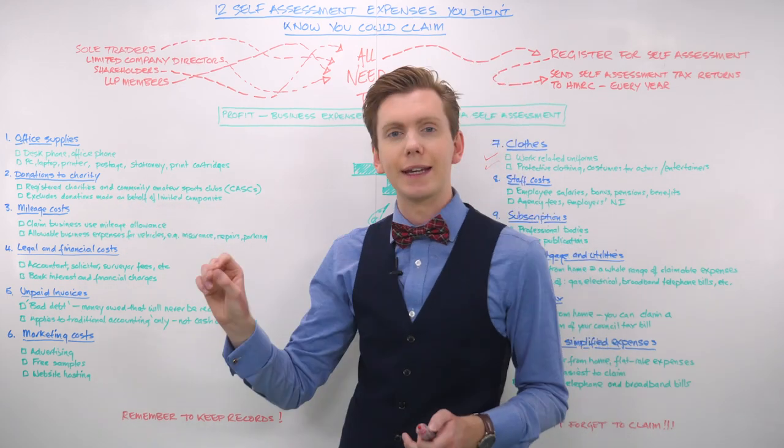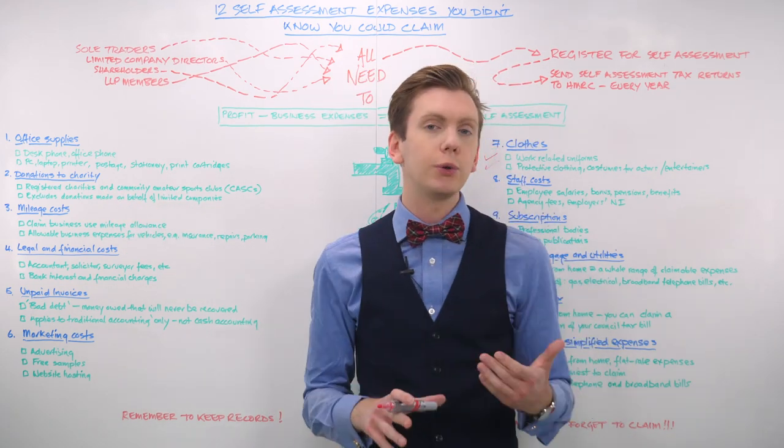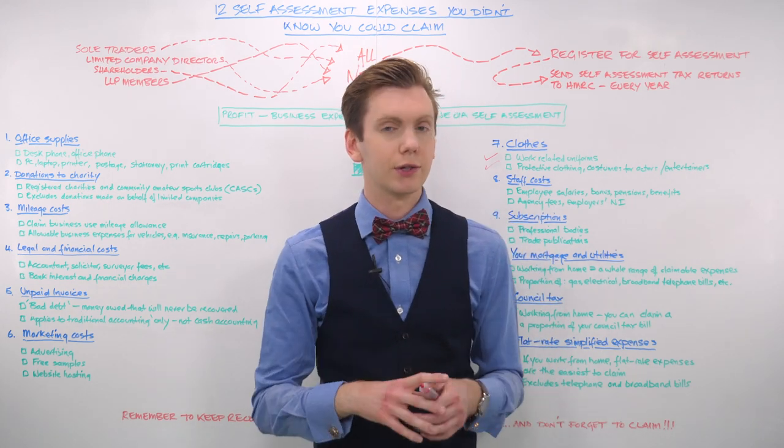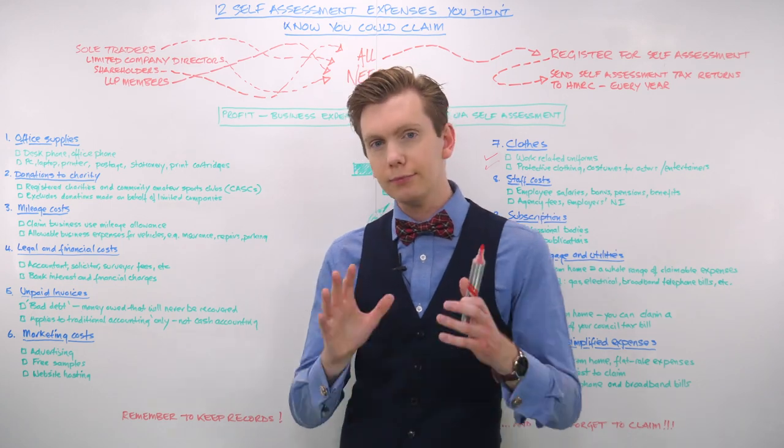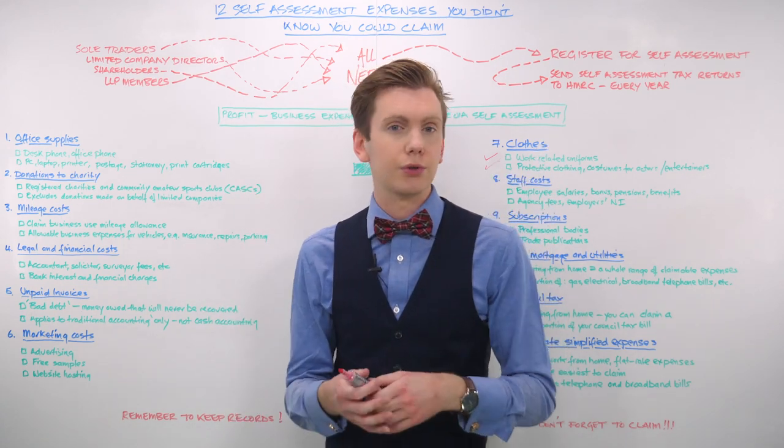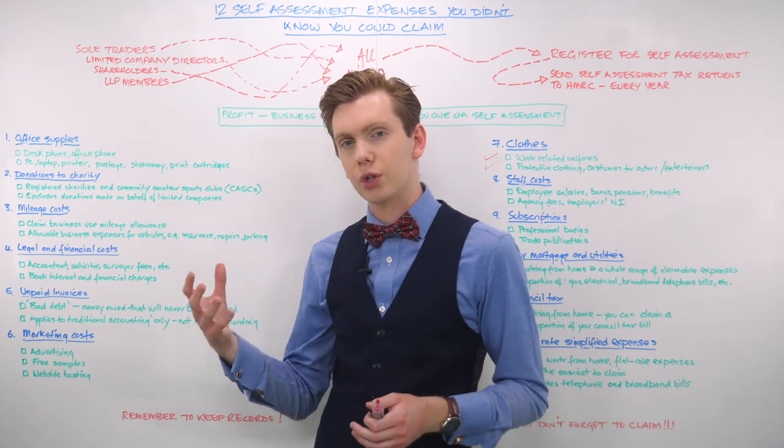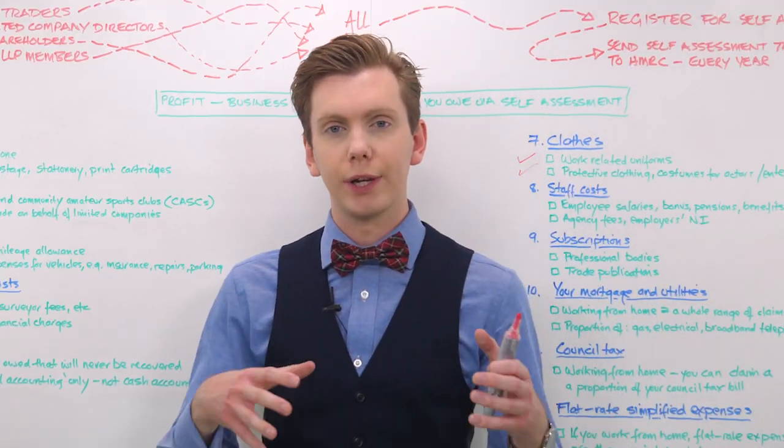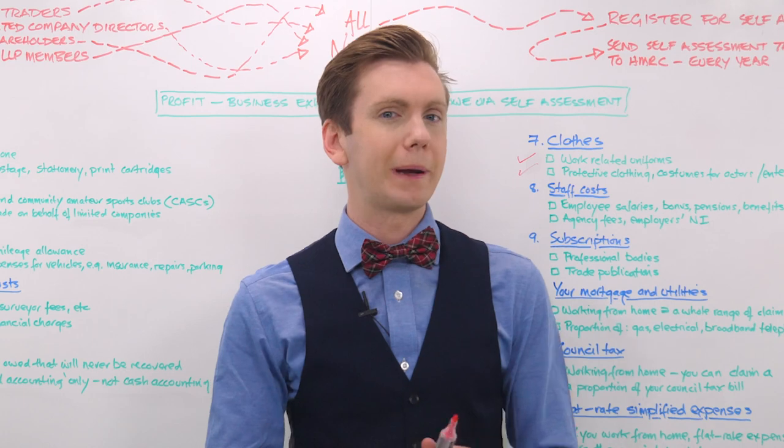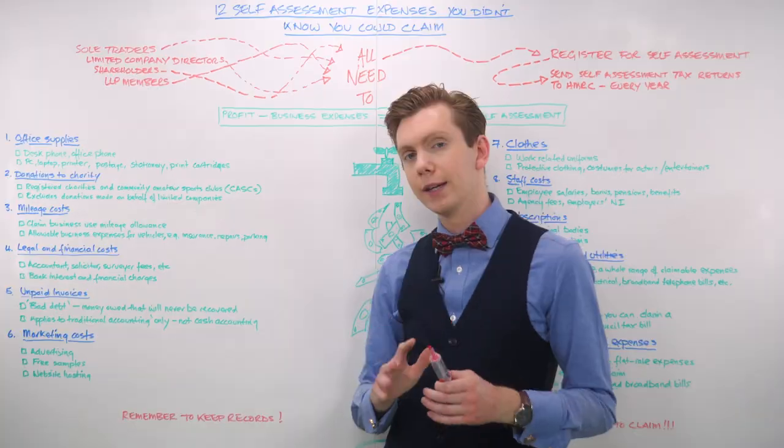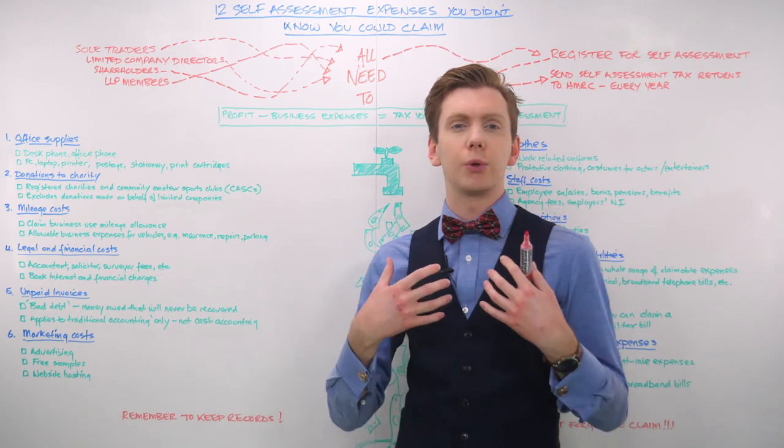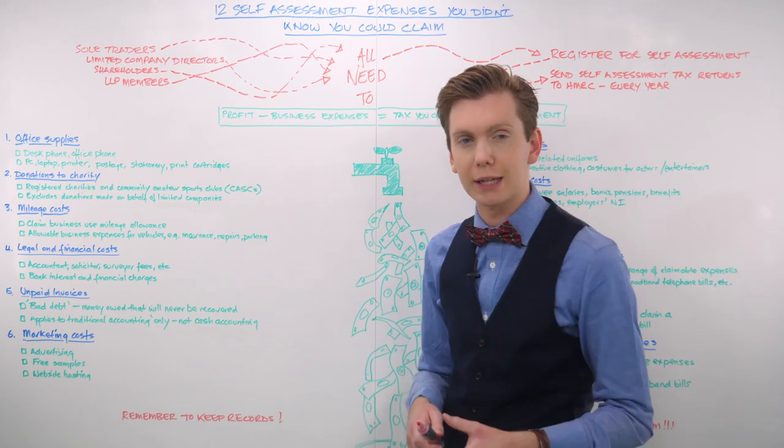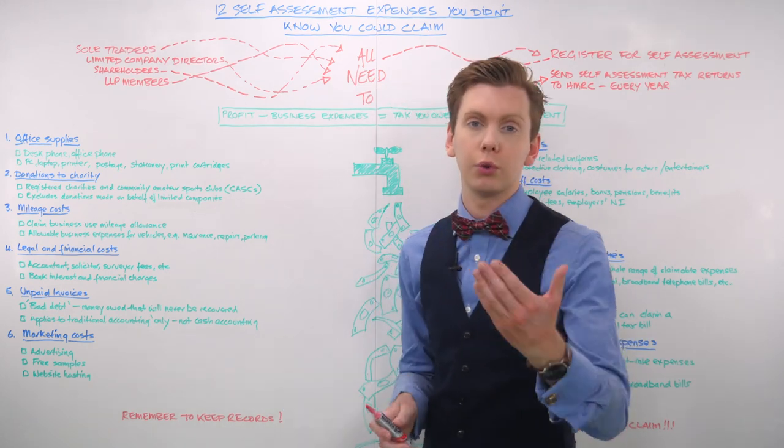So number two on our list is donations to charity. If you gave money to charity last year, you should be claiming those donations as self-assessment expenses on your tax return. All donations made by individuals to registered charities or community amateur sports clubs are 100% tax-free. This is called tax relief, and how it works depends on how you choose to donate the funds. Typically charitable donations are made through a gift aid or directly from your wages or pension through a payroll giving scheme, land, property or shares, or through your will.